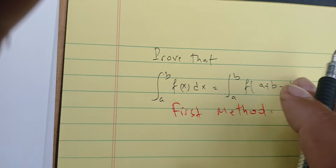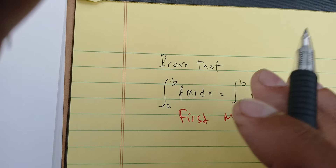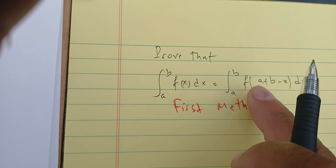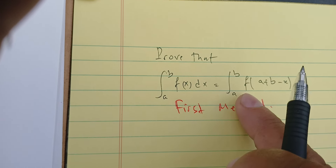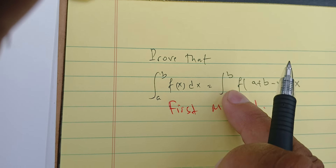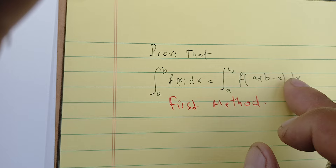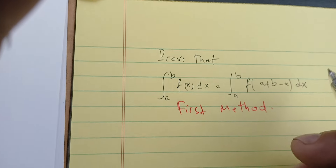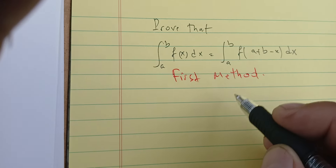What we are doing now is the easiest way. We're going to prove that the integral between a and b of f(a+b−x) dx is equal to the original integral, by using a change of variable that we're going to call y.